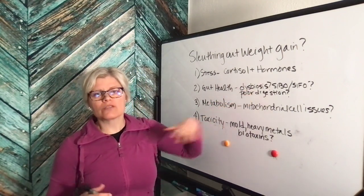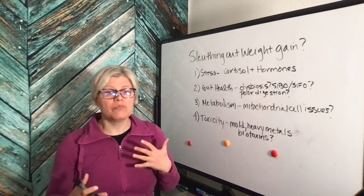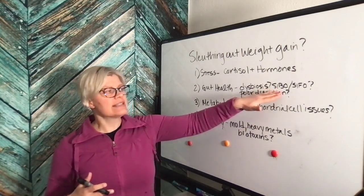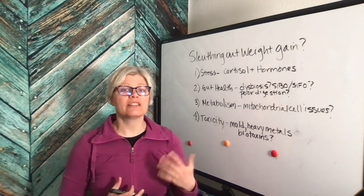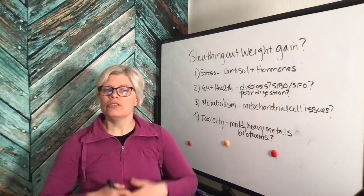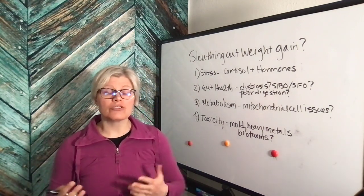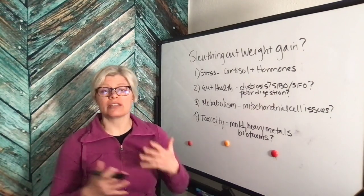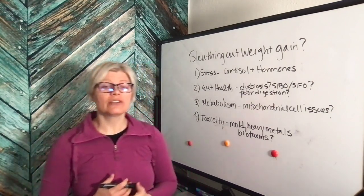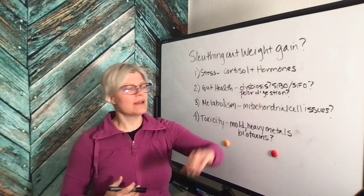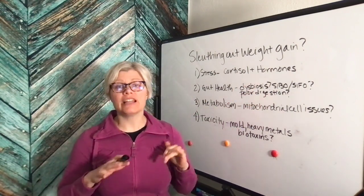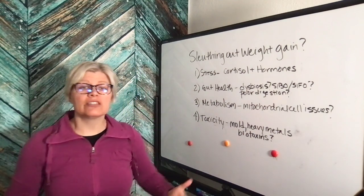I've written down dysbiosis, which means an imbalance of bugs within your gut. SIBO and SIFO. SIBO means small intestine bowel overgrowth. SIFO is small intestine fungal overgrowth. You can have overgrowth of one or the other. You can have parasites, all kinds of different things, even excess viruses in your gut causing trouble. Why do we get all those things? Boom. Poor digestion. That's what sets it all off.